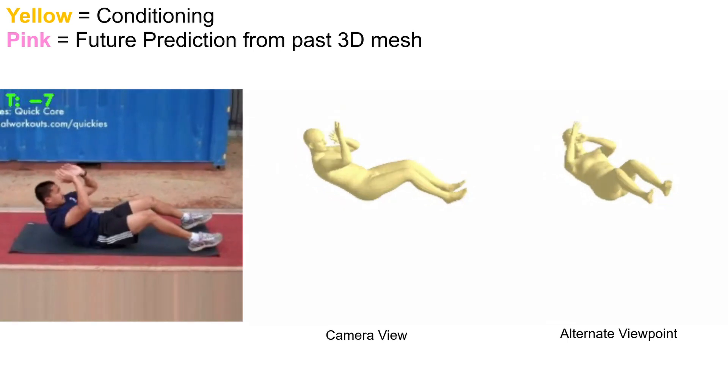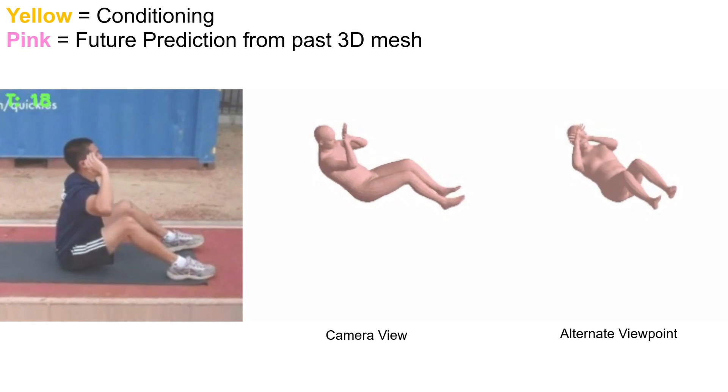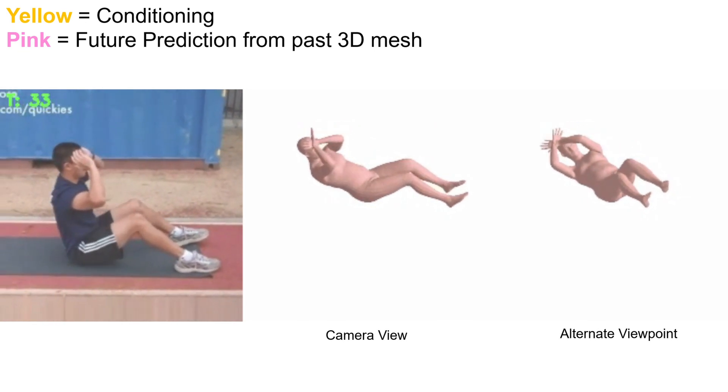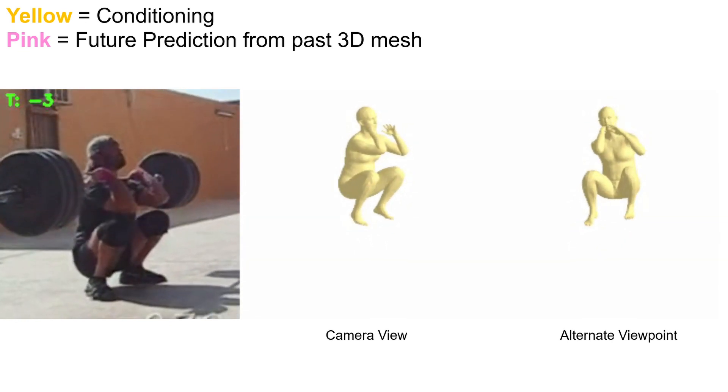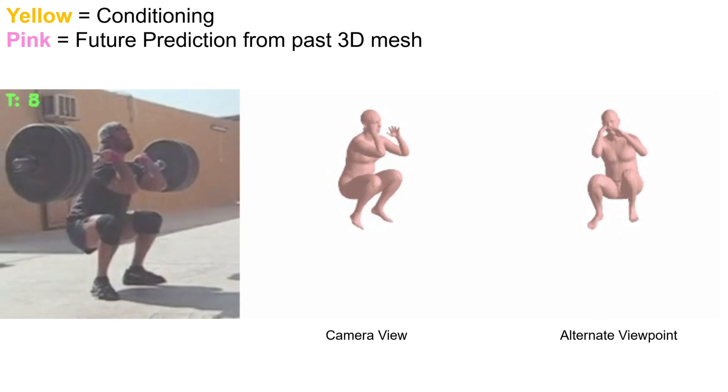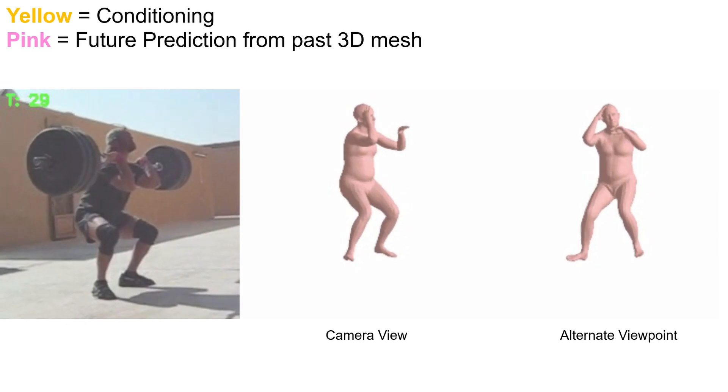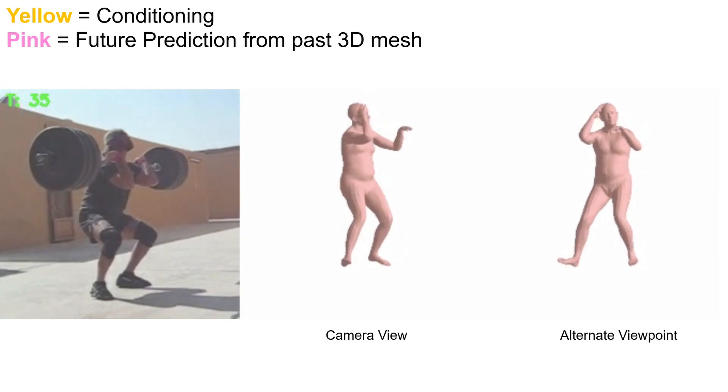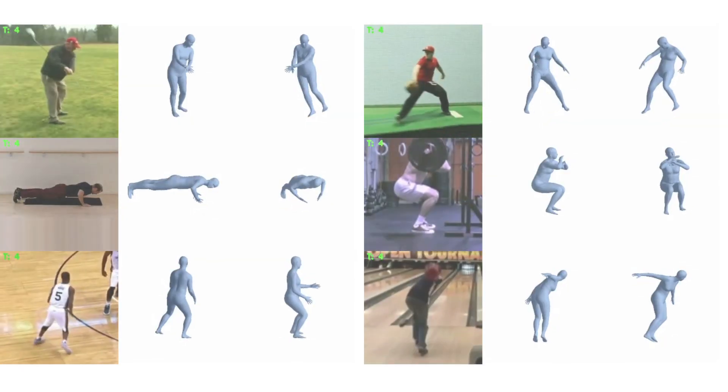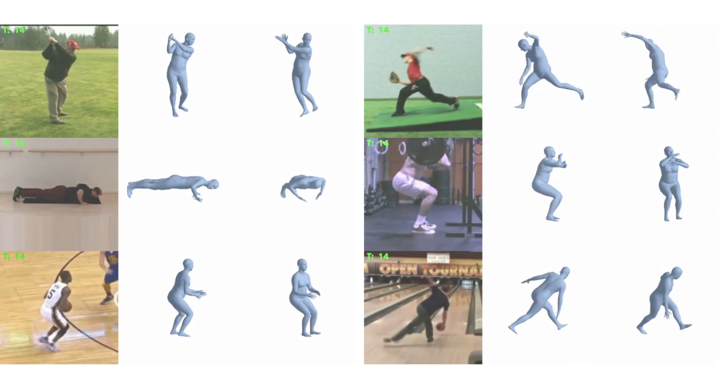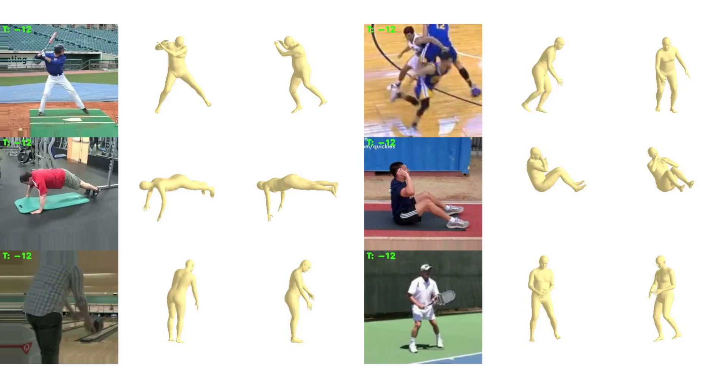Here we show the results of the autoregressive predictions made directly on the 3D mesh model. Here are some more qualitative results. Note that no ground truth 3D is available for videos in the wild. Therefore, the model has never seen these motions in 3D.